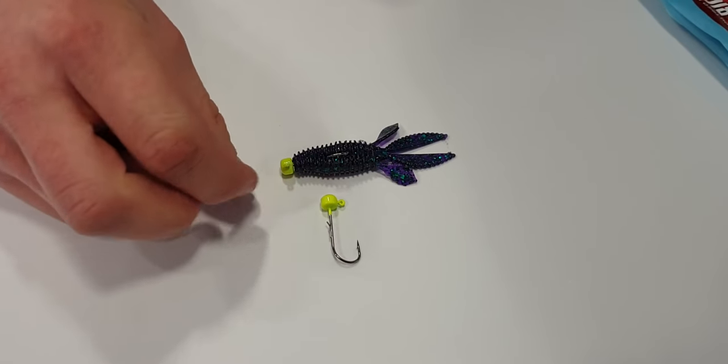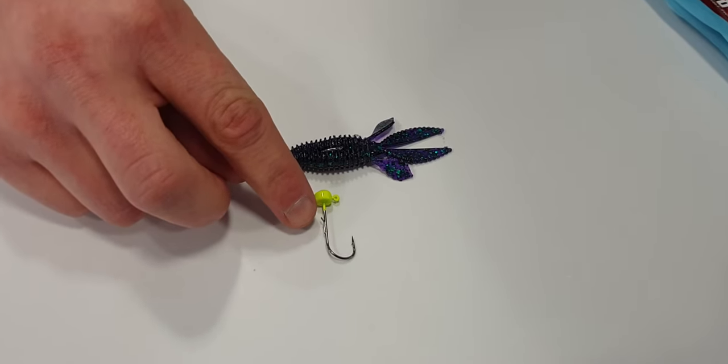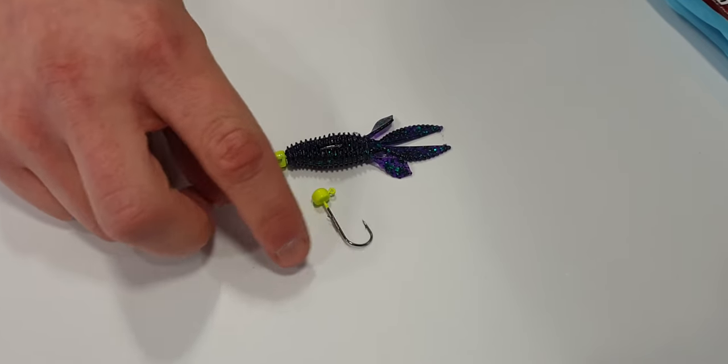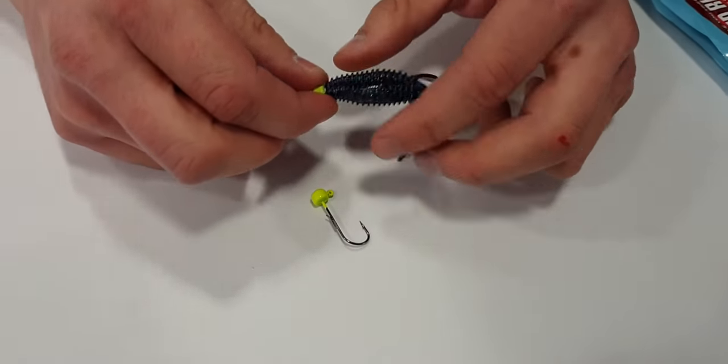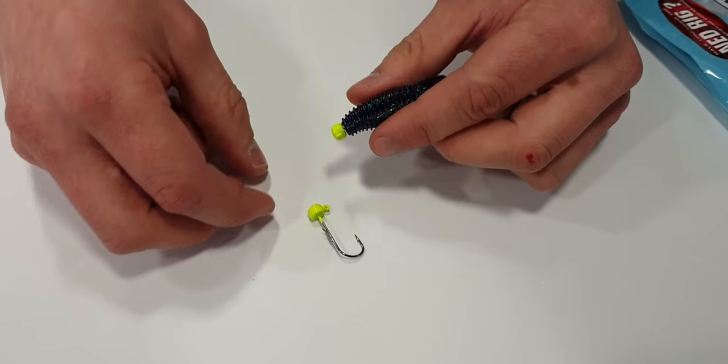When you're fishing these on the specific Ned Rig jig heads, the good thing about them is they come with a wire hook keeper and that does stop the lure from sliding down the shank, but as a secondary measure to make sure the lure stays in place or if you're using another type of jig head.